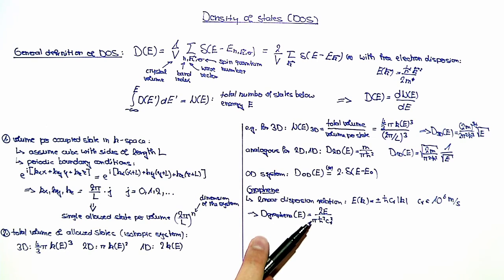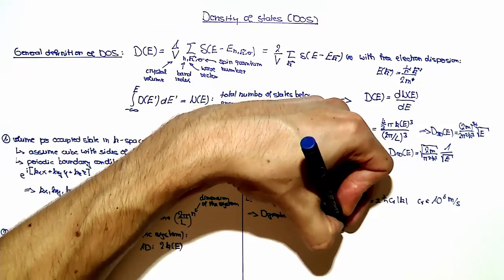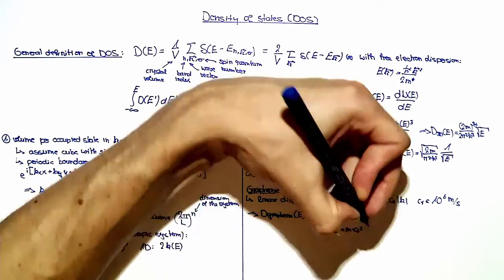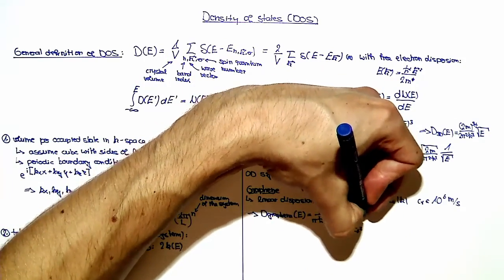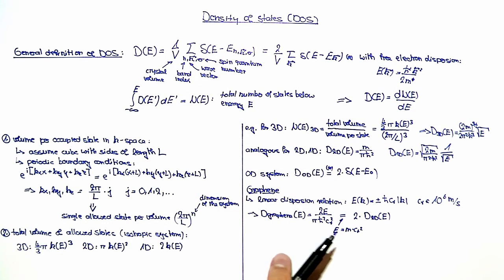Here you can see the density of states for the case of graphene around the k-point. If we plug in that E equals 2m times c-star squared, we will get 2 times the density of states in 2D. Note that for deriving this term, one also used that there is an additional valley degeneracy of graphene, which leads to a factor of 4 instead of a factor of 2 for the spin degeneracy.